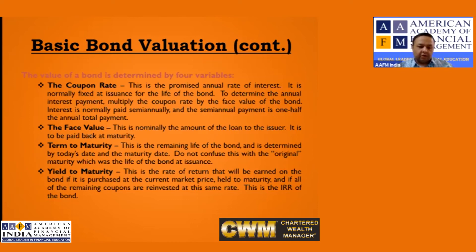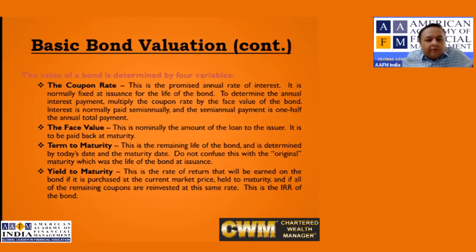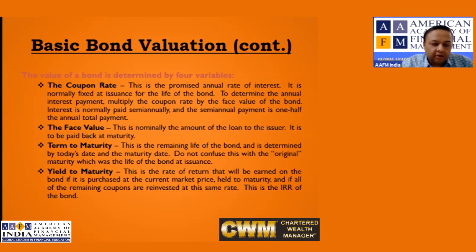YTM is also called the market discount rate. It represents the rate of return at which new bonds are being issued today — essentially the market rate of interest. YTM is guaranteed for you if you hold the bond till maturity. If you sell it before maturity, it is not guaranteed.